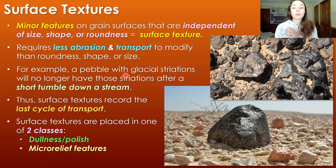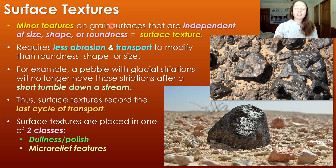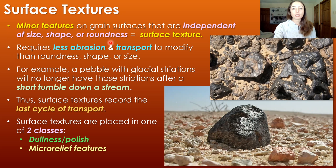Now I want to focus on minor features — minor in size but not in importance — which are micro surface textures on grains. These are independent of grain size, shape, and roundness. And unlike roundness, shape, or size, they require very little abrasion and transport to modify. They're very easily erased.